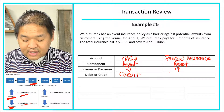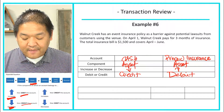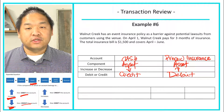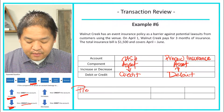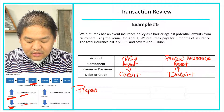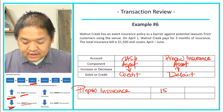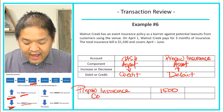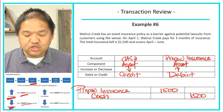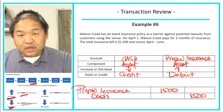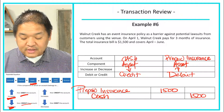Cash is an asset that is decreasing, therefore we credit cash. Prepaid Insurance is an asset that is increasing, therefore we debit it. Debits go first: debit Prepaid Insurance $1,500, credit Cash $1,500. Debits equal credits — looks good.